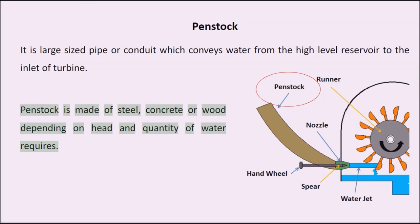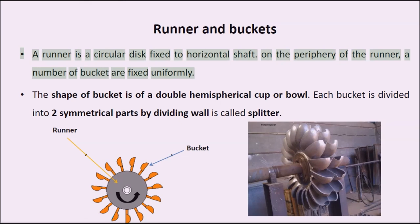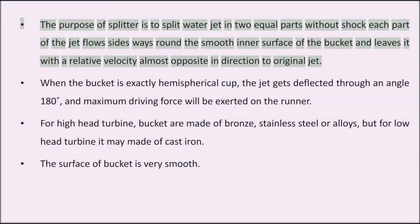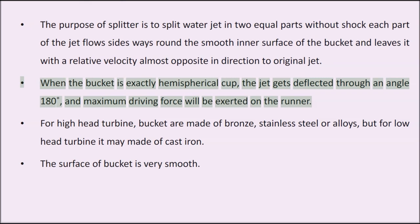A runner is a circular disk fixed to a horizontal shaft. On the periphery of the runner, a number of buckets are fixed uniformly. The shape of the bucket is a double hemispherical cup or bowl. Each bucket is divided into two symmetrical parts by a dividing wall called a splitter. The purpose of the splitter is to split the water jet into two equal parts without shock. Each part of the jet flows sideways around the smooth inner surface of the bucket and leaves it with relative velocity almost opposite in direction to the original jet. When the bucket is exactly a hemispherical cup, the jet gets deflected through an angle of 180 degrees, and maximum driving force will be exerted on the runner.